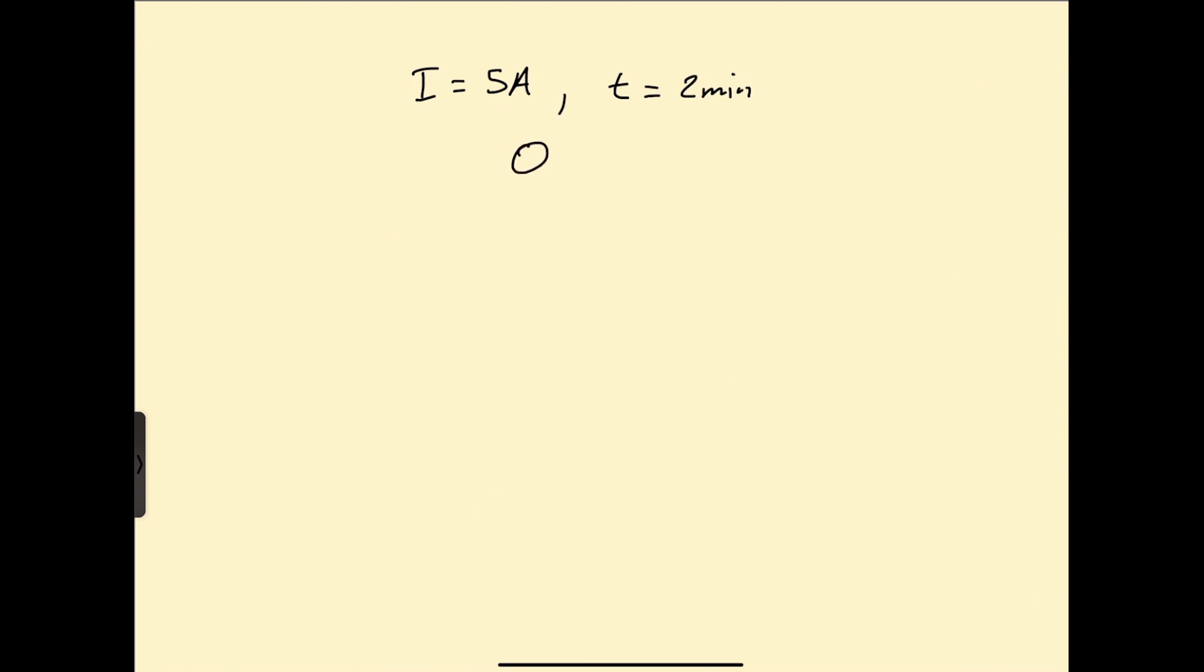So that is equal to the current times time. And because 1 ampere is maintained for 1 second, then in our case 5 amperes is maintained for 120 seconds.